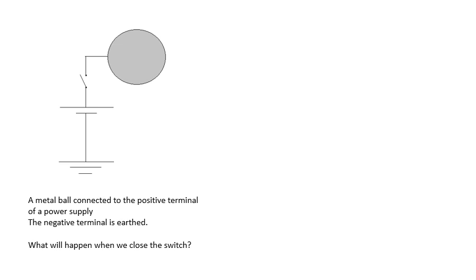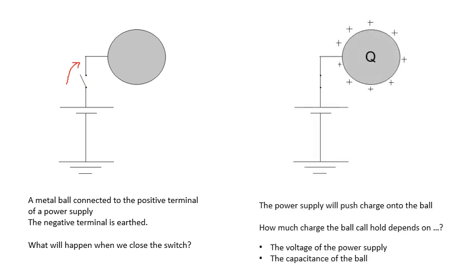So what is capacitance? Well imagine we've got a large metal ball and you'll see that I've connected the metal ball to a power supply. The switch is open at the moment, the ball is connected to the positive terminal, the negative terminal is connected to earth. So what's going to happen when we close the switch? Well what will happen is that the ball will become positively charged. Why? Because the power supply will push charge onto the ball, it will push positive charge onto the ball.